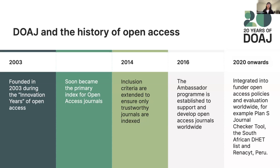In 2016, the directory launched the Ambassador Program to support and develop open access journals worldwide, placing people in different regions to collaborate with publishers and editors locally and help make the directory truly global rather than just a European organization providing things to the world. From 2020 onwards, the DOAJ has been integrated into open access policies around the world, including the European Union's Plan S and other policies.